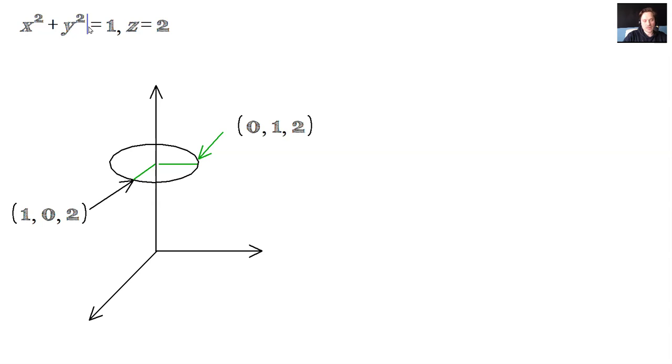That makes the equation true. 1 squared plus 0 squared is 1, so the first equation is true, and then 2 equals 2 is also true. So that's what it looks like this far. It's a circle, and the plane z equals 2.